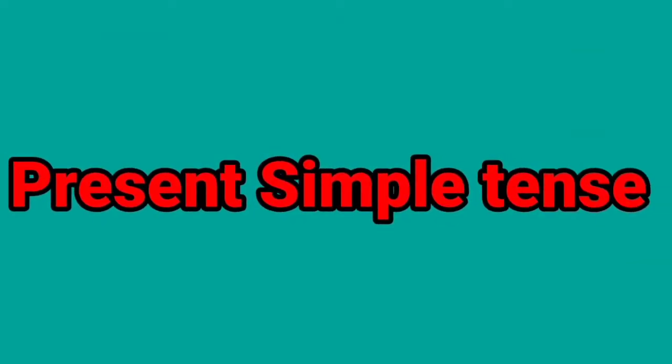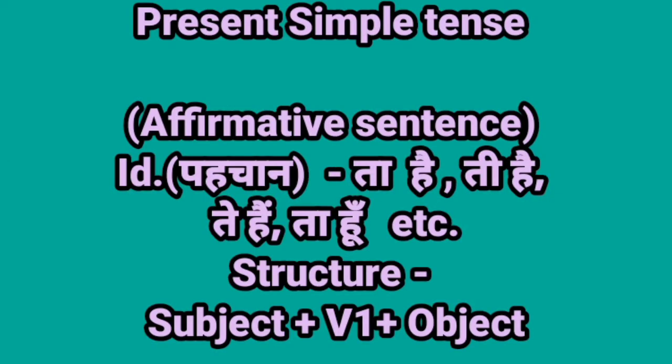Present simple tense — present matlab vartamain, simple matlab samanya, tense matlab kaal — so samanya vartamain kaal. First, let's look at affirmative sentences. Affirmative sentence means sakaratmak vakya. To identify present simple tense, if a sentence ends with ta hai, ti hai, te hai, ta hun, etc., it is present simple tense. Structure: Subject + verb first form + object.